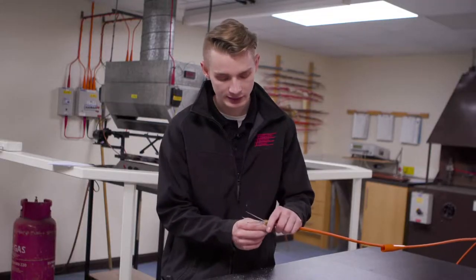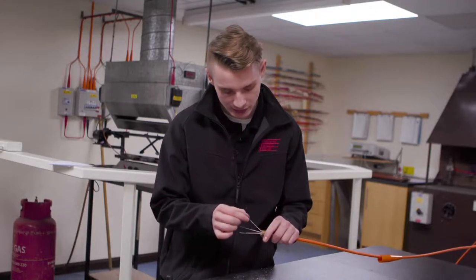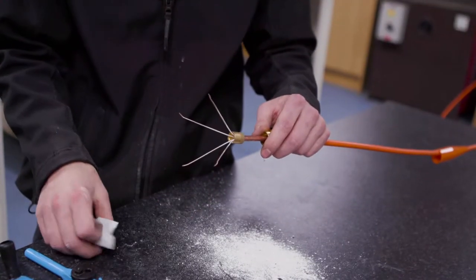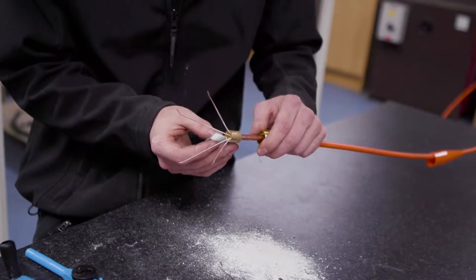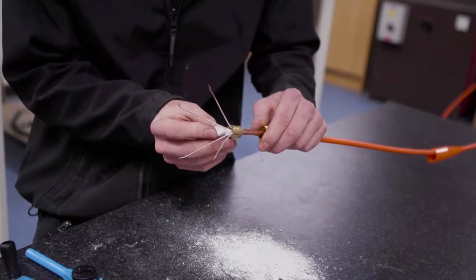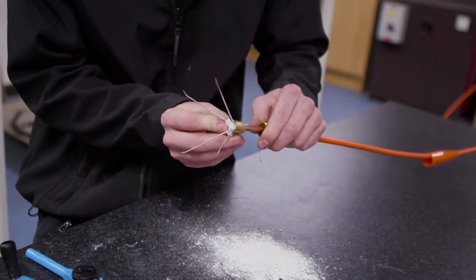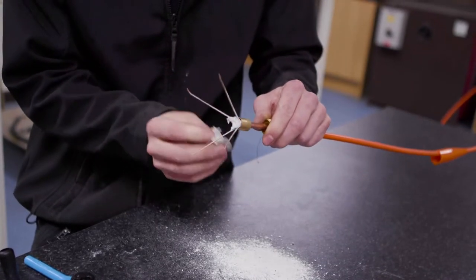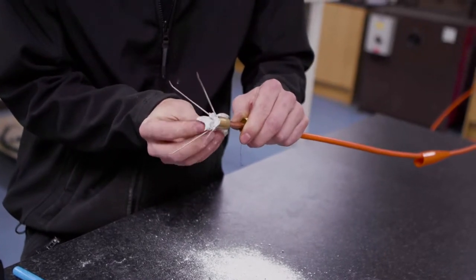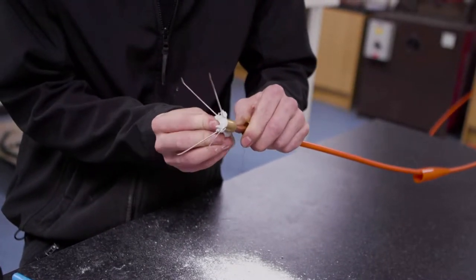Our next step now is to spread the conductors out, making sure that none of them are touching. Then we'll apply the compound from one side only, making sure we push it all the way down into the base of the pot until it starts coming out of the other side, so we know that there's no air locked inside of the pot.